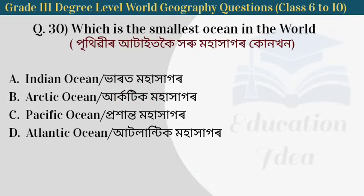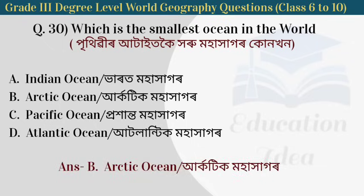Next question: which is the smallest ocean in the world? The answer is the Arctic Ocean — the Arctic Ocean is the smallest ocean in the world.